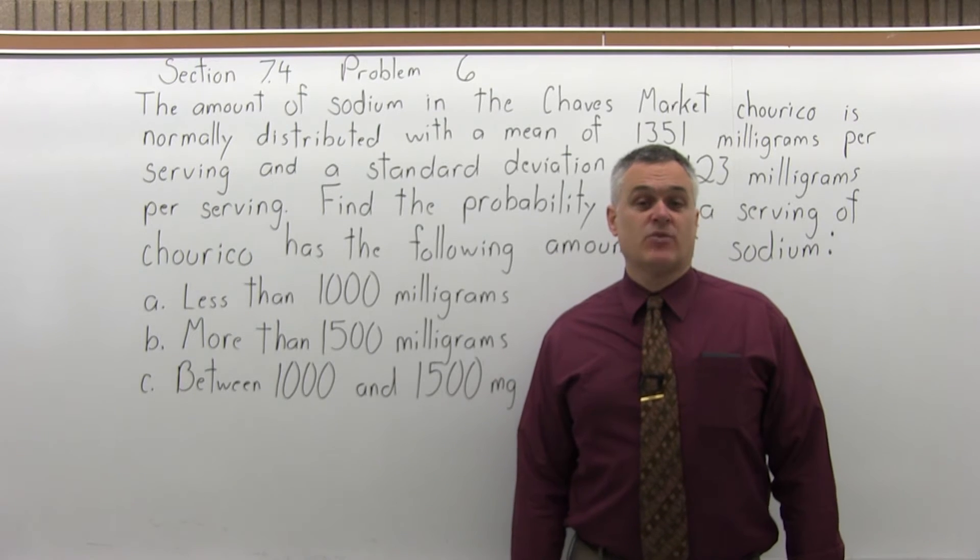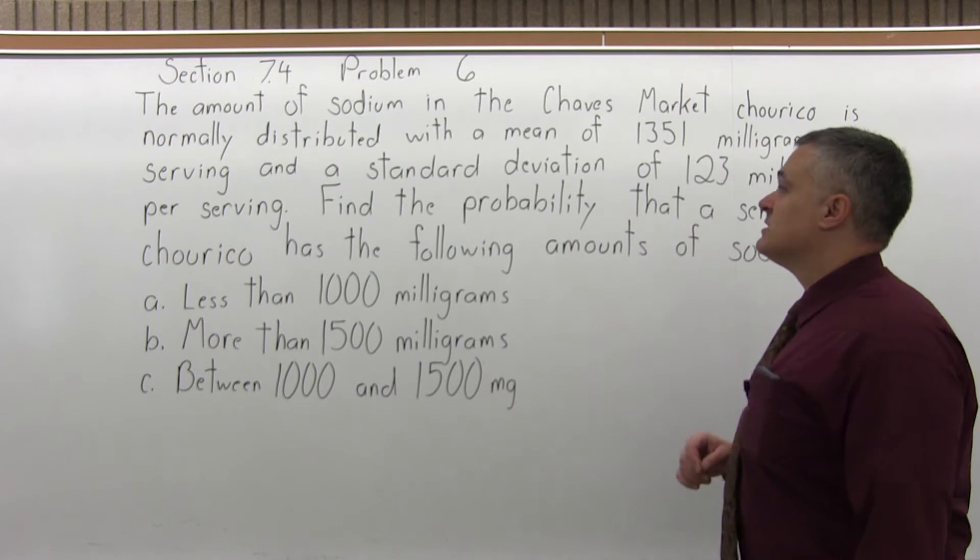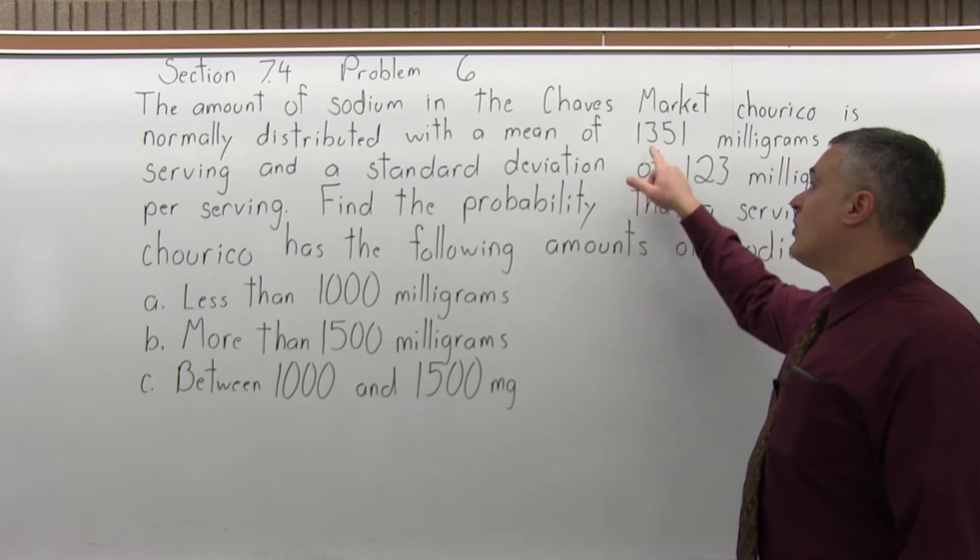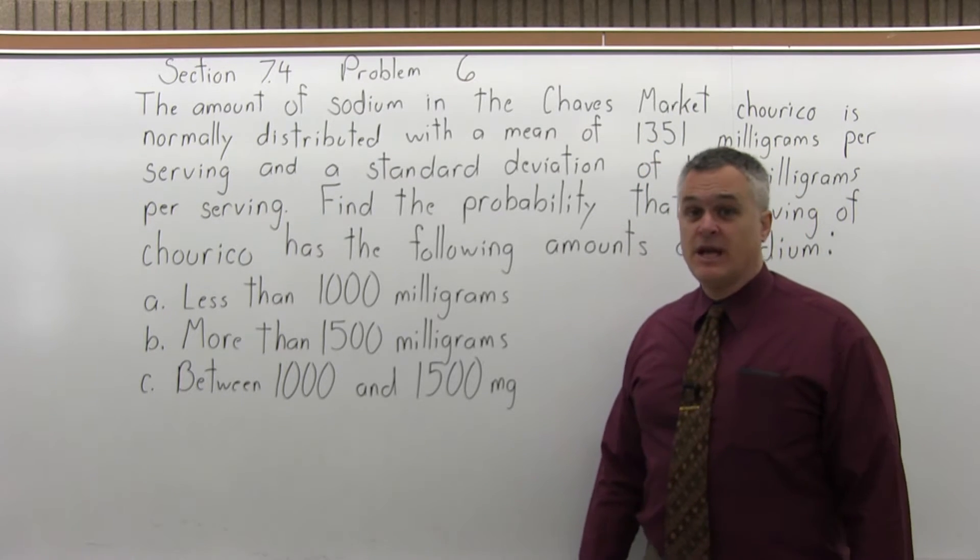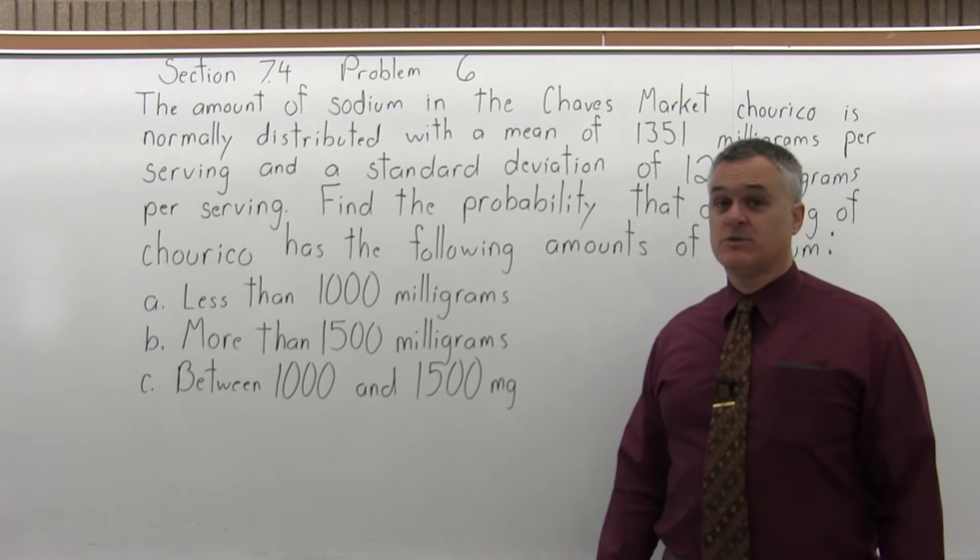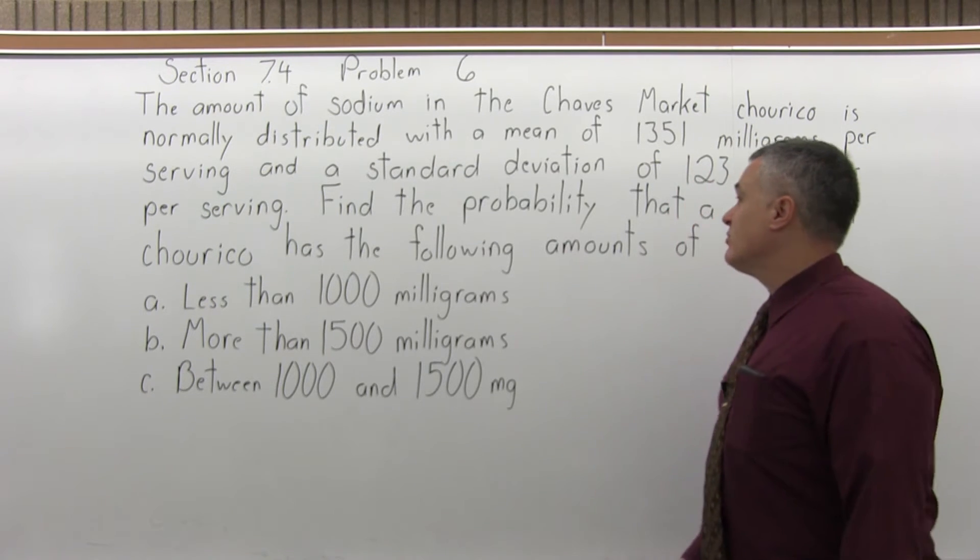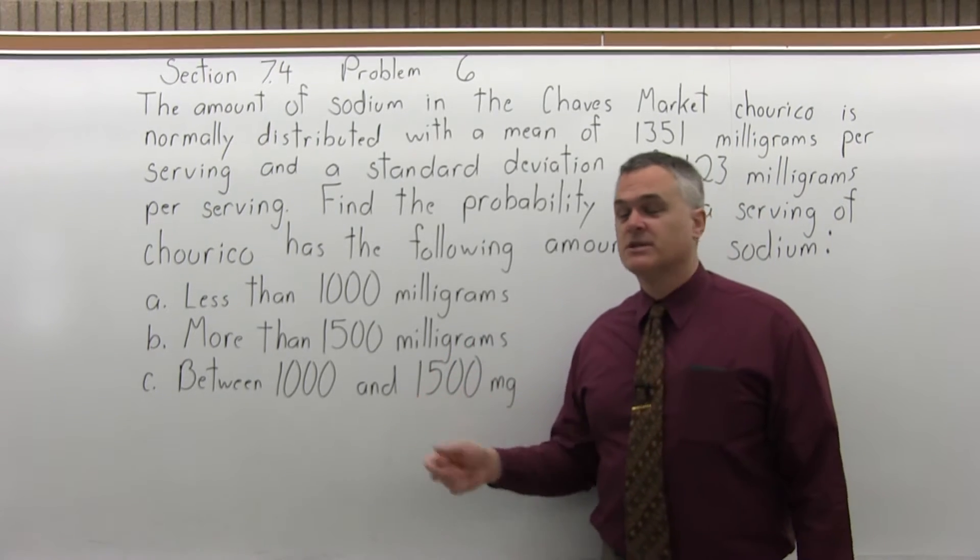This is Section 7.4, Problem 6. The amount of sodium in the Charves Market series is normally distributed with a mean of 1,351 milligrams per serving and a standard deviation of 123 milligrams per serving. Find the probability that a serving of Charves has the following amounts of sodium, and there's part A, part B, part C.